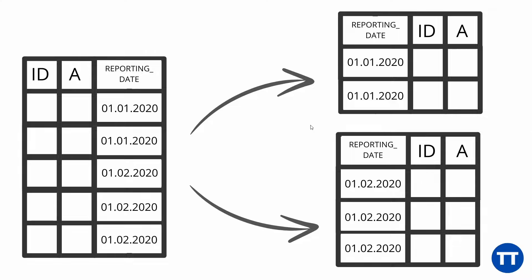A very common use case of partitions is in analytical databases where we have reports that contain data reported for every month. For example, at the end of every month, a process would calculate some statistics from that month and add them to the table. So we would have rows here from the 1st of January 2020 and rows here from the 1st of February 2020.